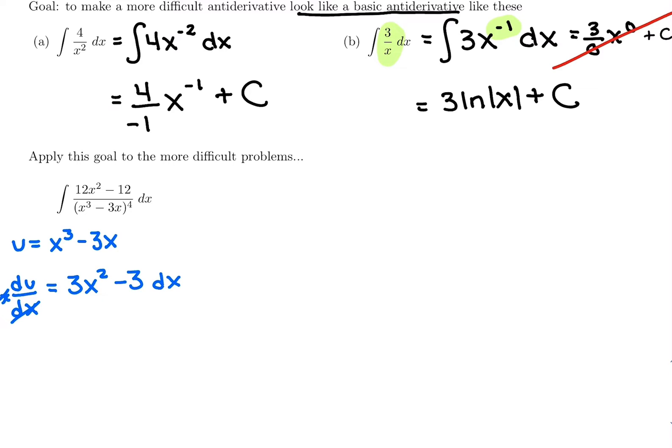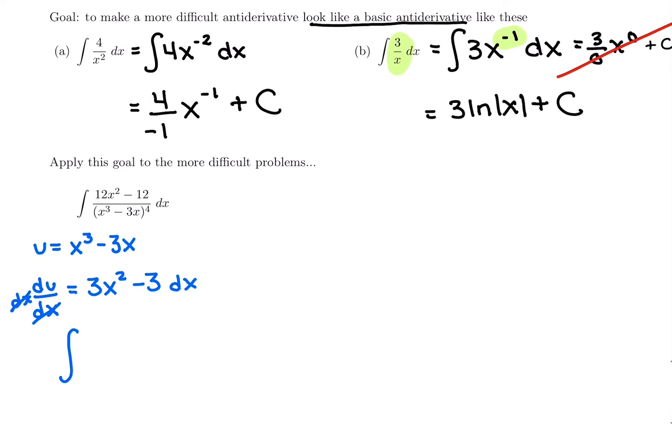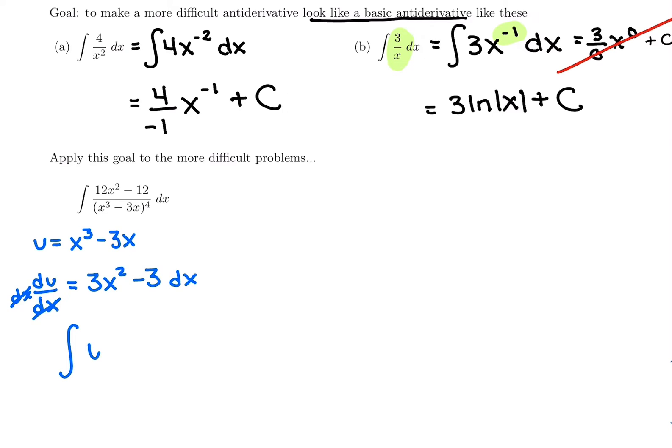And now we are ready to do some substitution. Every time we substitute in for something that would have been a quotient rule for a derivative means that our antiderivative, when we do substitution, is going to have u to a negative power. So I'm going to write this as u to the negative, because I'm taking it out of the denominator, and it was to the fourth power. So this is really to the negative 4. We stepped in for the whole denominator.